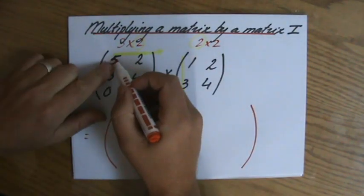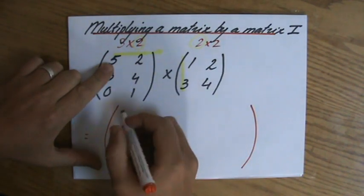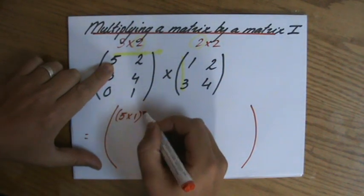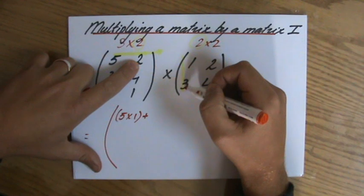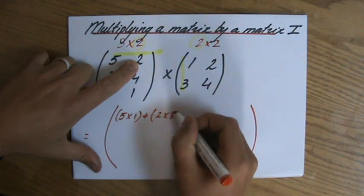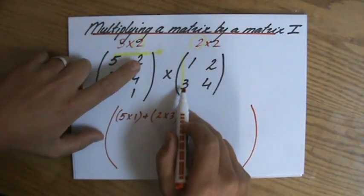I'm gonna start at five. I do 5×1 - you see that 5×1, I'm multiplying 5×1. I put it in brackets because I have to do plus - I'm going horizontally and vertically here - 2×3. So 5×1 + 2×3.